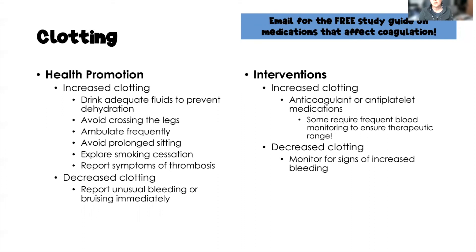Interventions for increased clotting are going to be anticoagulant or antiplatelet medications. The free study guide covers these in detail. Many of these medications require frequent blood monitoring to ensure a therapeutic range, and patients need to understand that. Also, any patient on an anticoagulant or antiplatelet medication will have a decreased ability to clot — these are often called blood thinners — so they must monitor for and report unusual bleeding or bruising. For decreased clotting, interventions are similarly focused on monitoring and reporting any signs of increased bleeding.